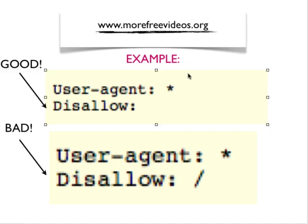If you recall from the previous video, we talked about an XML sitemap. You can consider that a tool to help with the inclusion of pages — you're basically helping the search engines along, and you want those pages to be included. A robots.txt file, on the other hand, can be used for exclusion, as you've seen here.